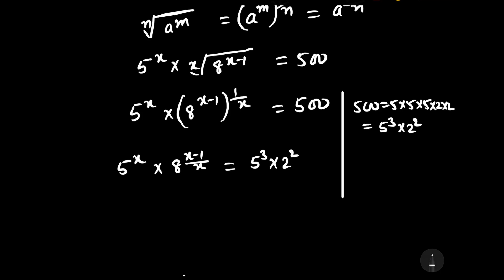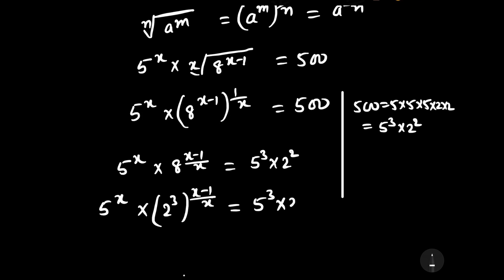Further, we can write it as 5 to the power x into 2 to the power 3 — since 2 to the power 3 is equal to 8 — whole bracket to the power (x minus 1) upon x, is equal to 5 cubed into 2 squared.